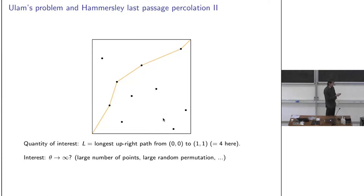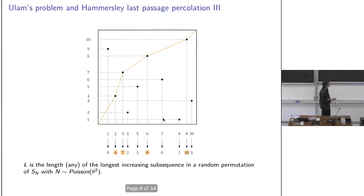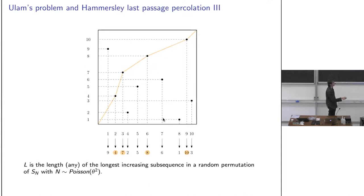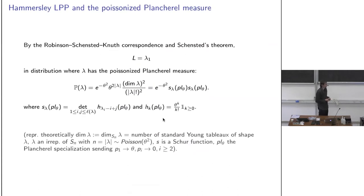The interesting question is what happens to L — the length of this longest path — as θ goes to infinity. L equals the length of the longest increasing subsequence of a random permutation from S_n, where n is the Poisson parameter. You order the points and the number eaten equals the length of this longest increasing subsequence; the sequence needn't be unique.